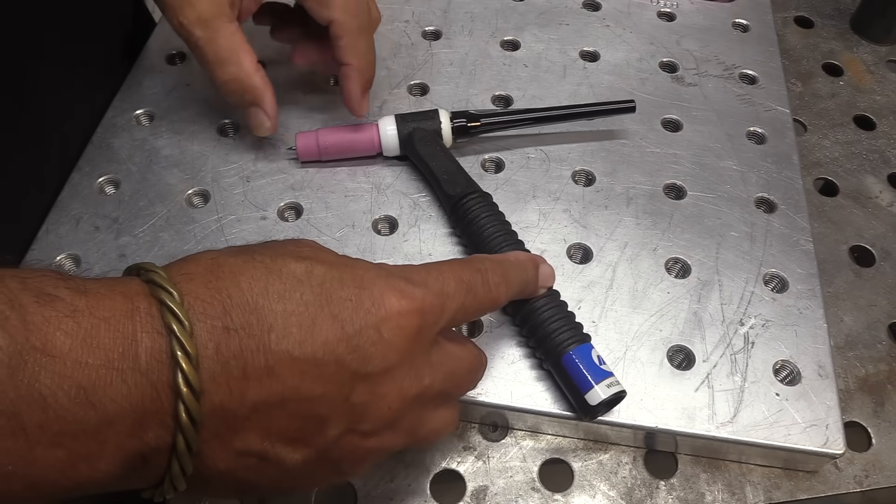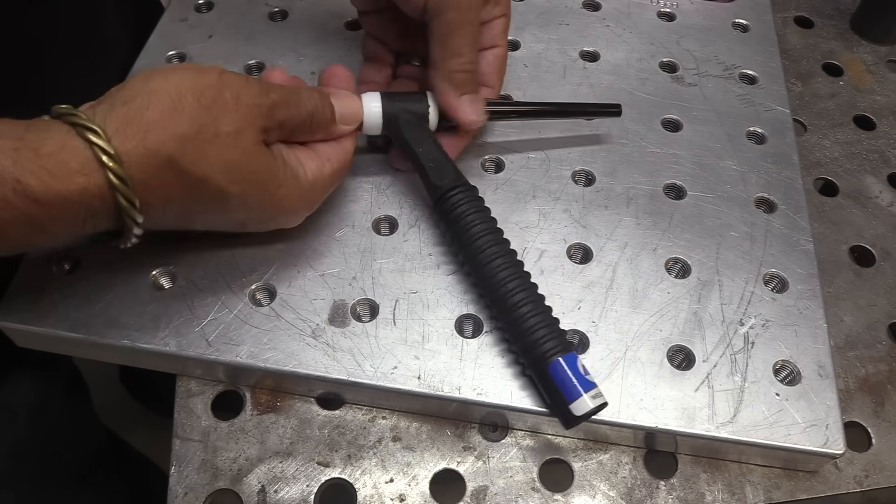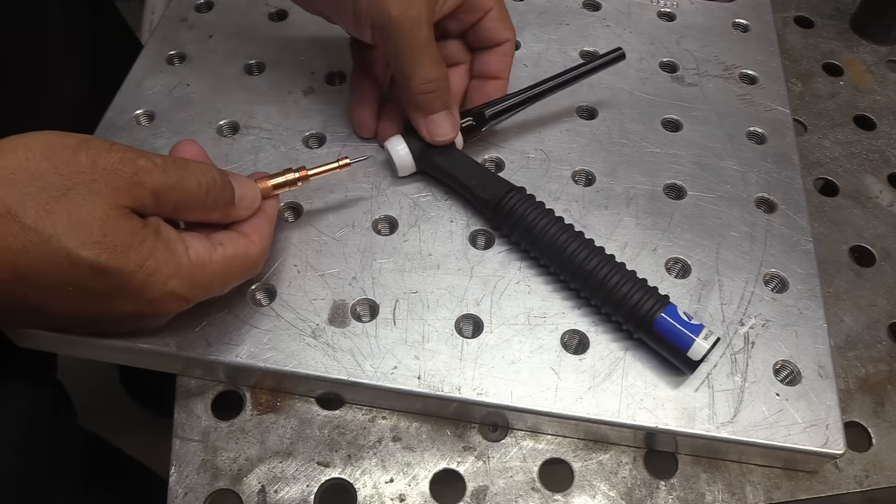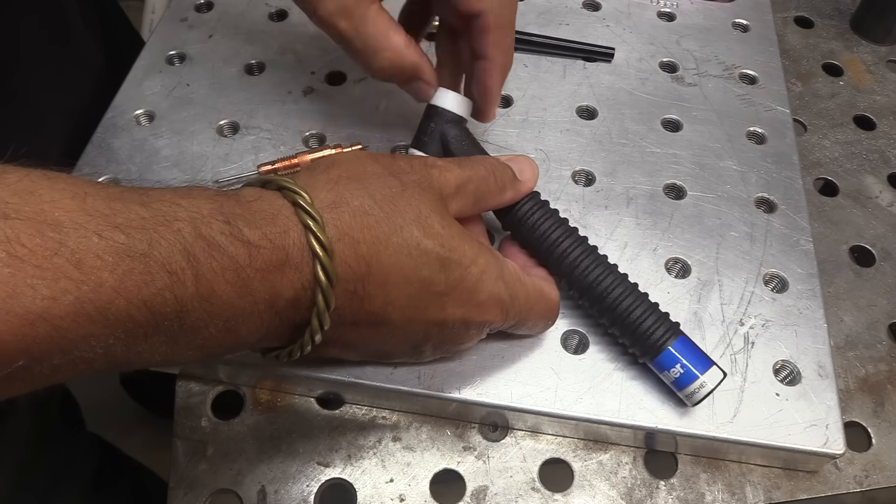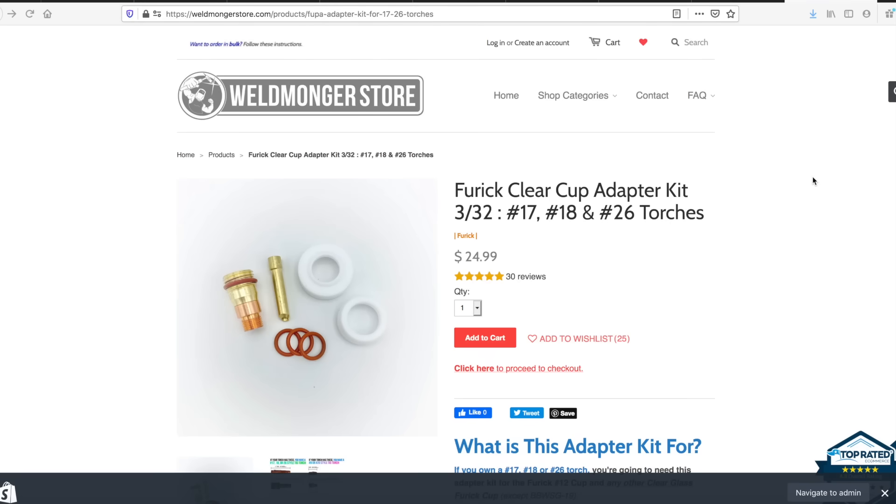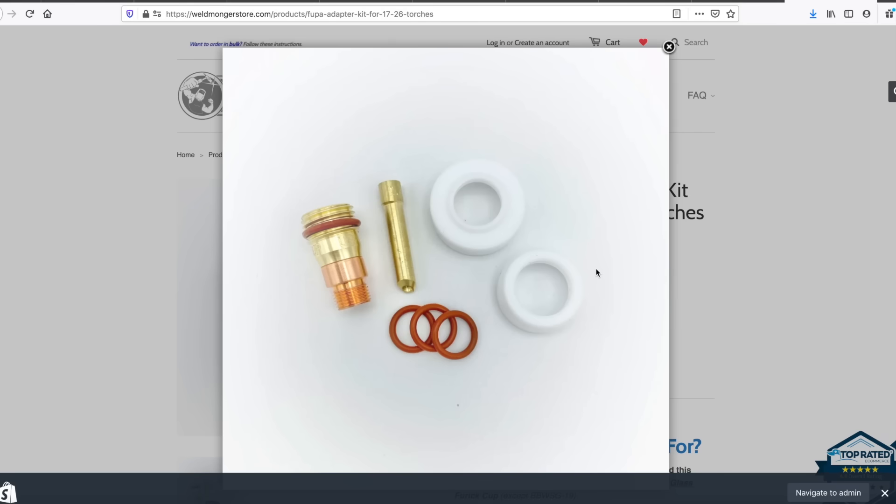This is a 17 air-cooled torch—it's one of the most common torches out there. Water cooled 18s and 26 style torches use the same collet body and hardware. If this looks like your torch, you'll probably need this adapter kit. This is the cheapest way to make the Jazzy 10 work with that style torch.